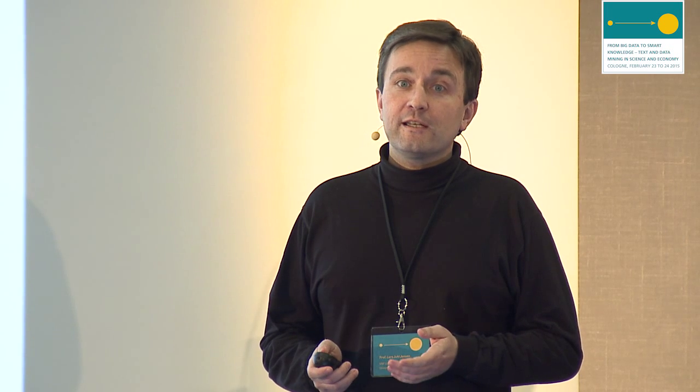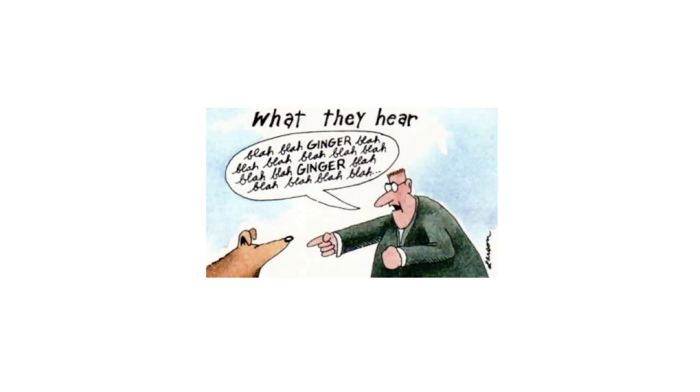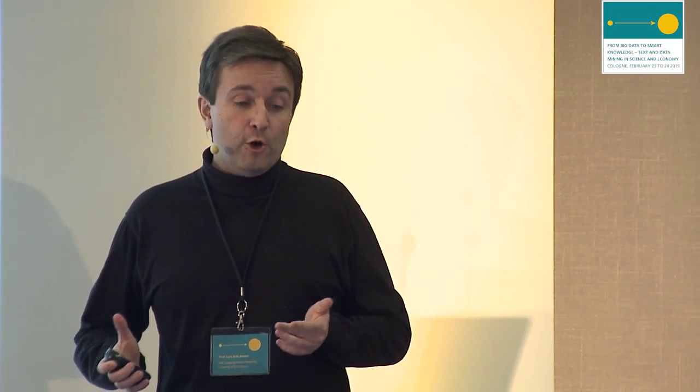Now, when I need to get a computer to do something like reading text, I find it useful to think about the analogy that a computer is about as smart as a dog. By that I mean that if I put sufficient effort into it, I can train it to do specific tricks. Borrowing a cartoon: what we say to dogs is something like, 'Ginger, stay out of the garbage — understand, Ginger, stay out of the garbage or else.' And of course the only thing the dog understands is its own name — Ginger — and all the words in between is just blah blah blah. I'm slightly more ambitious on behalf of my computer: I want it to recognize names of stuff I'm interested in, and I fully accept that most of the text in between those names is going to be blah blah blah to the computer.